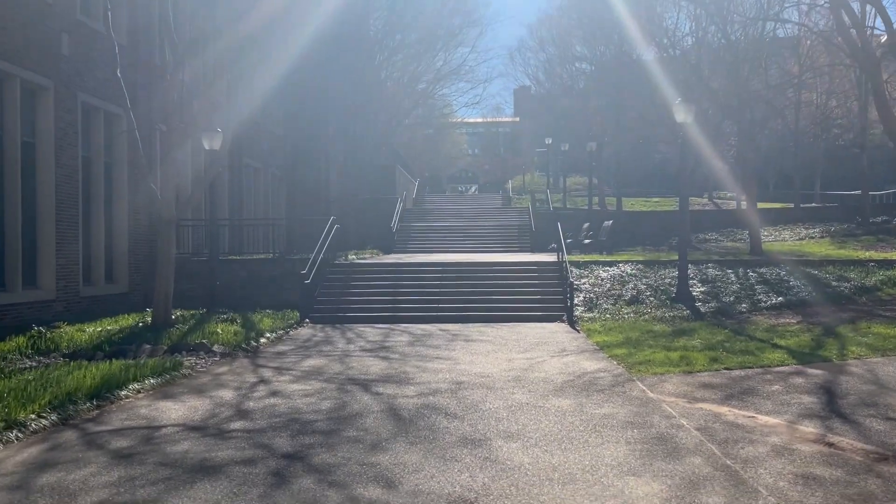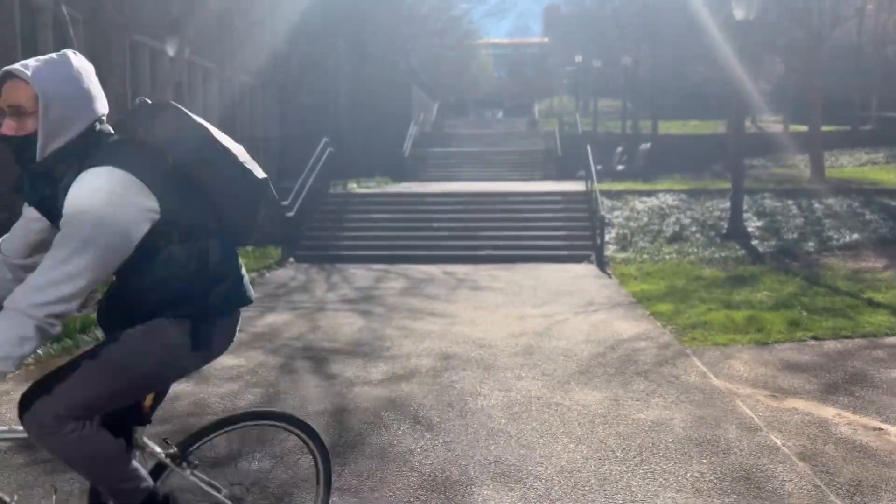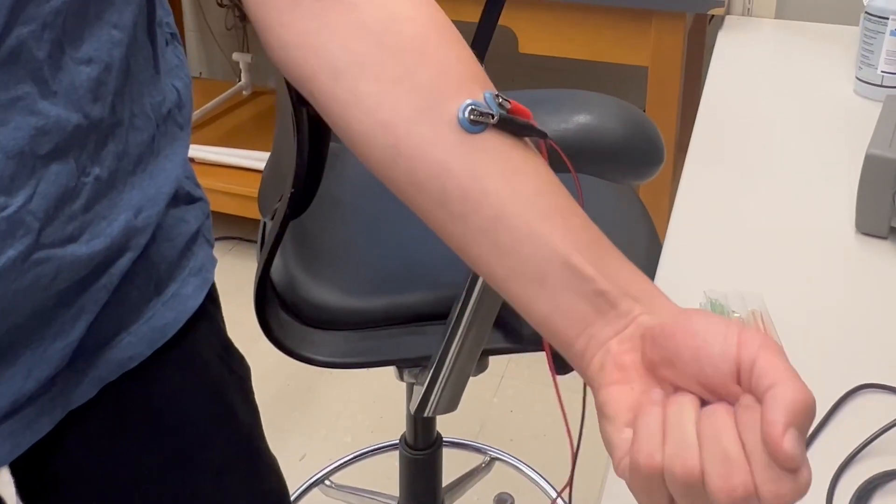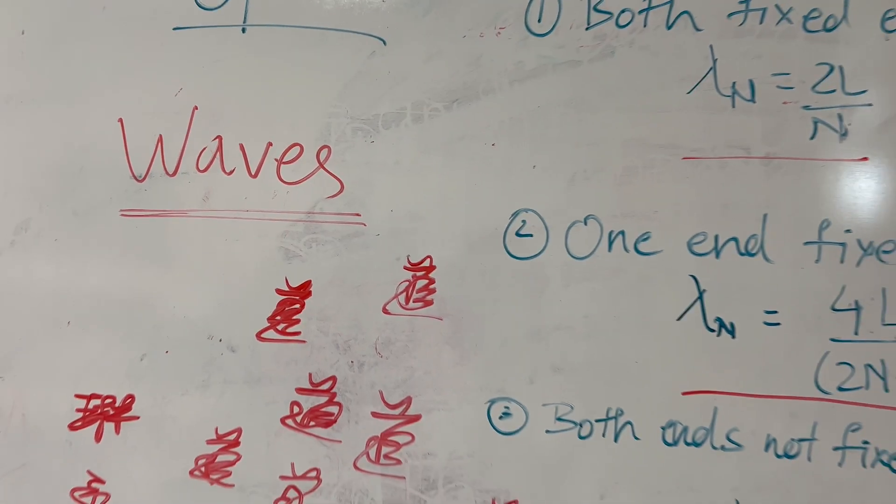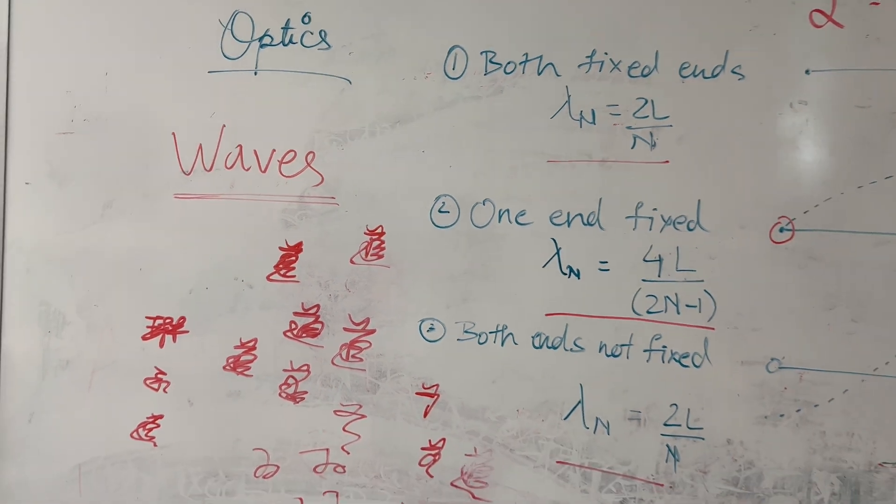Everything is a signal. Signals are just ubiquitous around us. Light can be treated as a signal. The muscle potentials that we measure with our electromyographic devices can be treated as signals. Even probability distributions and things that are much more abstract can be signals.